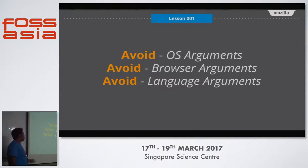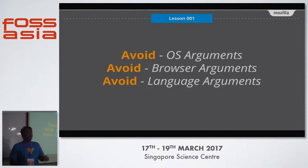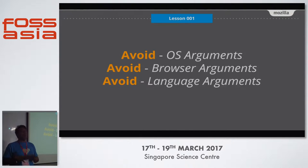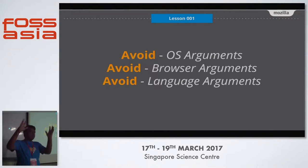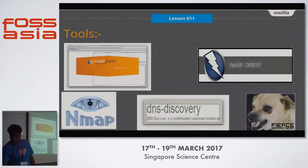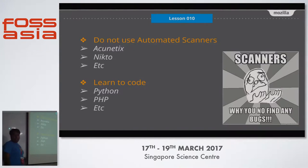The second thing: avoid operating system arguments, browser arguments, and language arguments. It's not mandatory to code in C or Python — you can use any language. If you code securely, your system can be secure. Don't argue that Linux makes your system secure or Windows makes it insecure — you can use anything, as long as you code securely.